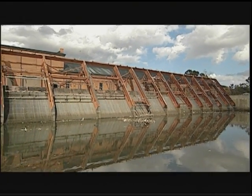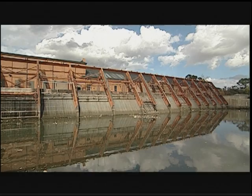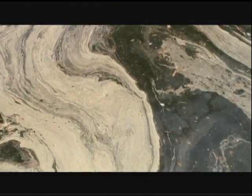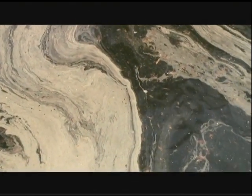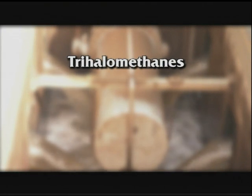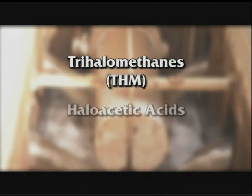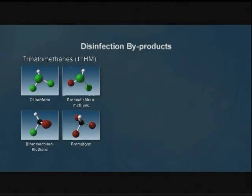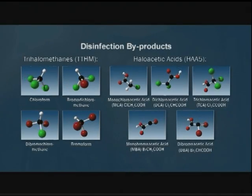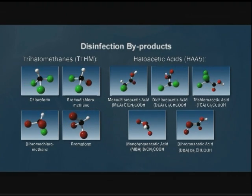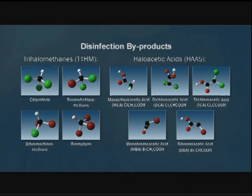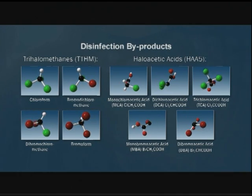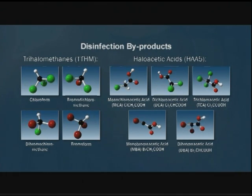It's important to remove organic materials from the source water prior to pre-chlorination because they can react with disinfectants to form DBPs. The two main groups of disinfection byproducts that are regulated are trihalomethanes, abbreviated THM, and haloacetic acids, or HAA. The four THMs and the five HAAs act as indicators for DBP occurrence in a water system. Therefore, the reduction of these two groups indicates a reduction in overall DBPs.